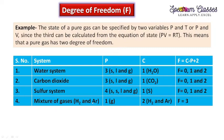For a mixture of gases such as hydrogen and argon — two non-reacting gases — the number of phases is 1 and the number of components is 2. Applying the formula gives F equals 2 minus 1 plus 2, which equals 3 degrees of freedom. This means pressure, temperature, and concentration all need to be specified for this kind of system.